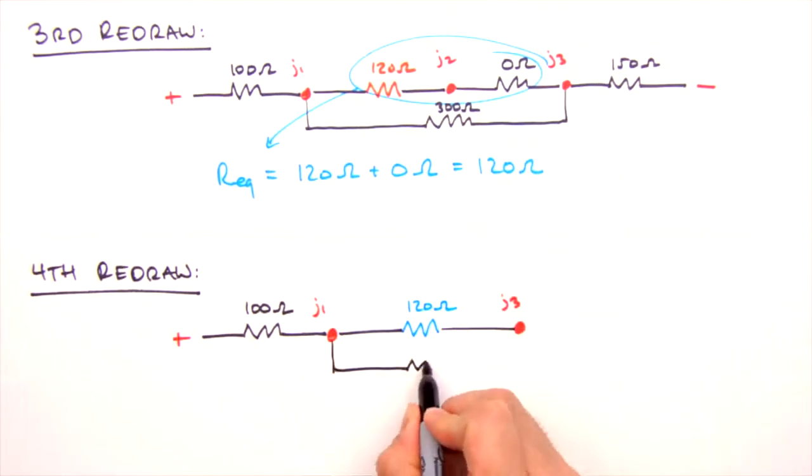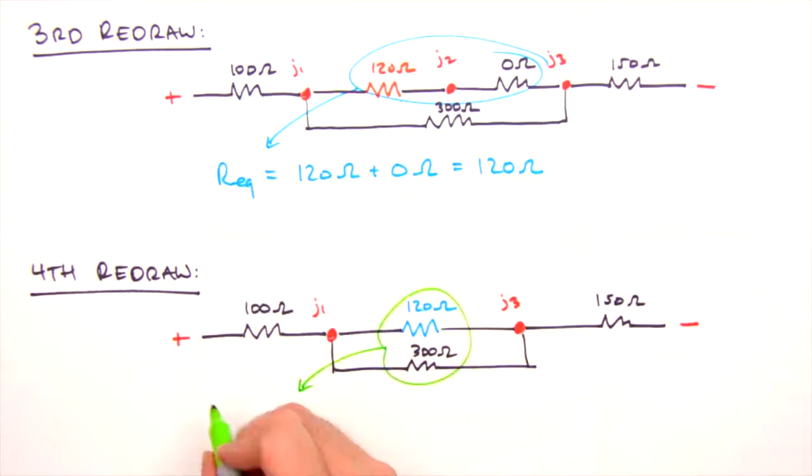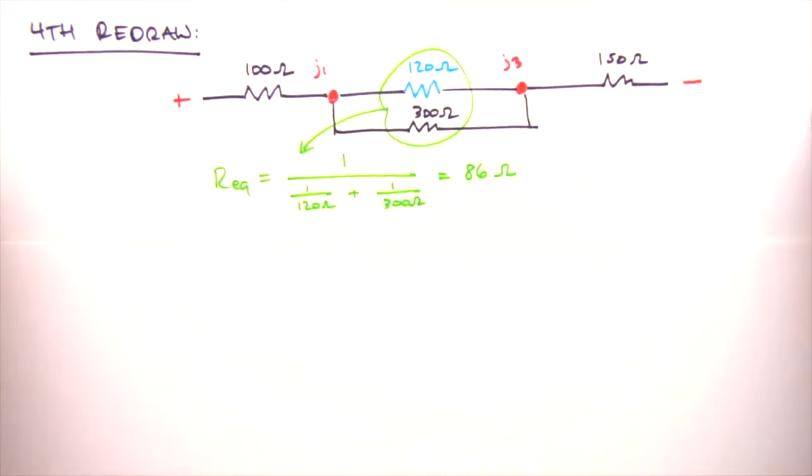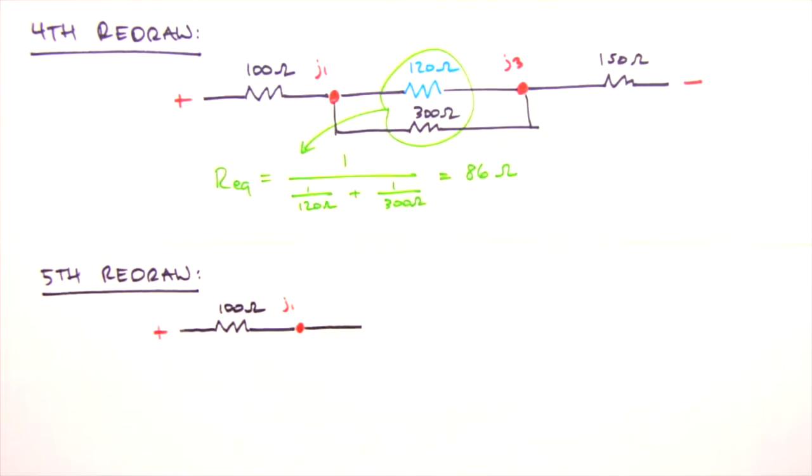And perhaps by now you've identified the next resistors to be combined. The two in parallel right here. So for their equivalent resistance, we'll have 1 over 1 over 120 Ohms plus 1 over 300 Ohms, which yields 86 Ohms. Again, we redraw the circuit, this time replacing the two parallel resistors between junction 1 and junction 3 with our 86 Ohm resistor.